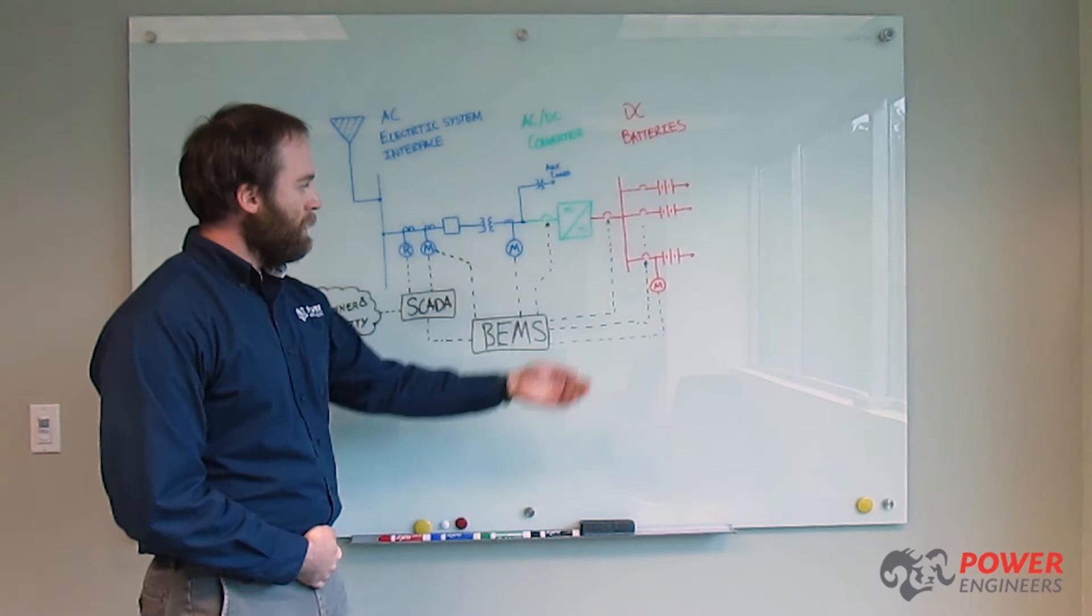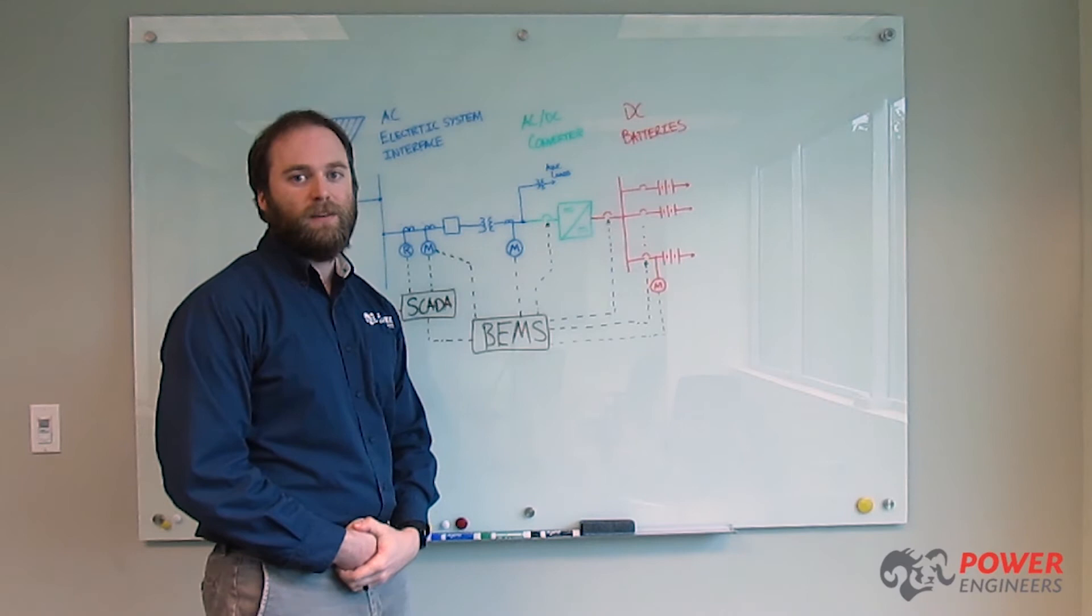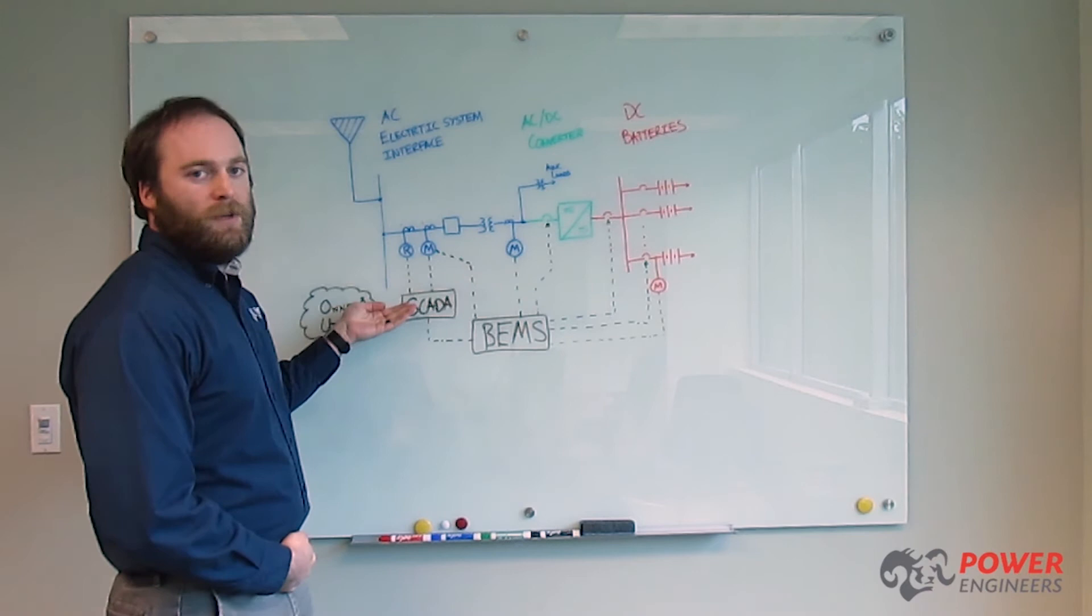Moving upstream, an AC-DC converter bi-directionally converts between DC power and AC power as needed, both for charging the batteries as well as to provide desired BESS outputs.